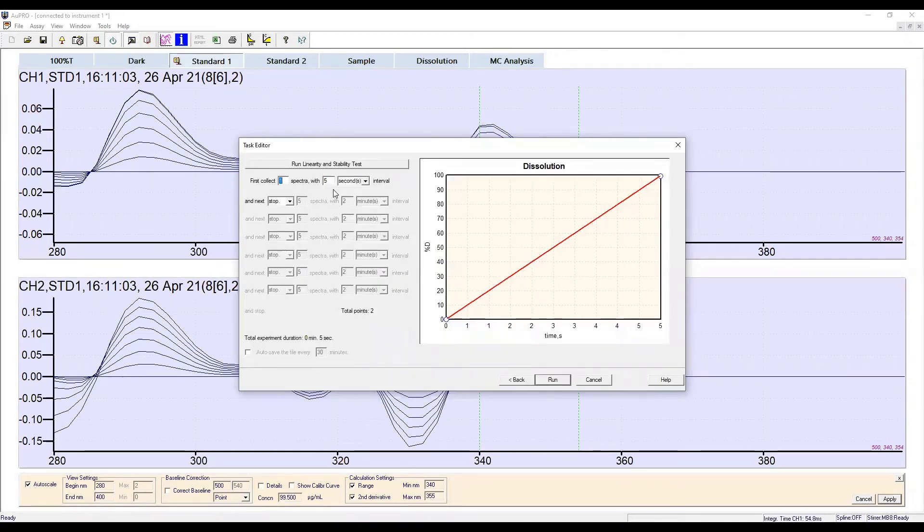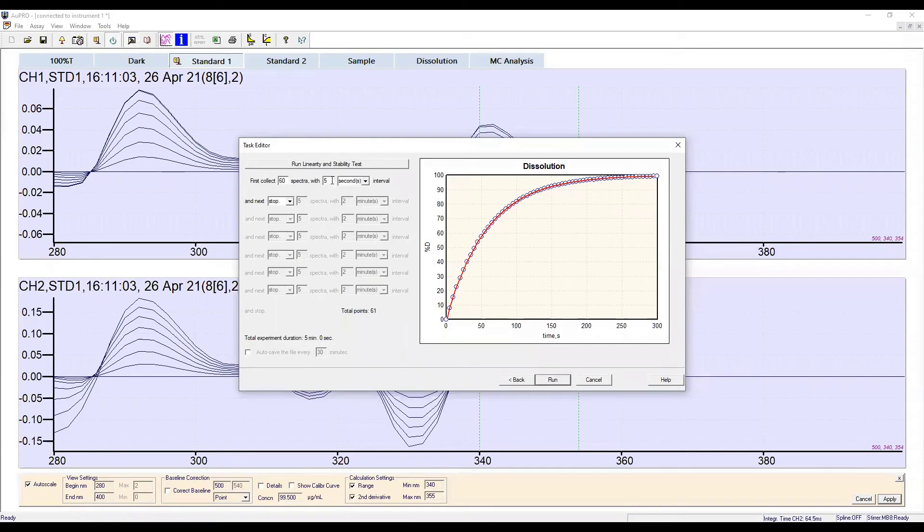The final setup screen is for inputting the number of data points to be collected and the interval between each, thus defining the duration of the assay. Up to seven data collection sectors can be defined, allowing the user to collect data at different frequencies depending on the stage of the assay. The autosave feature can also be switched on at this stage.